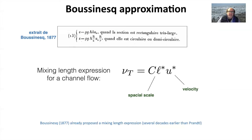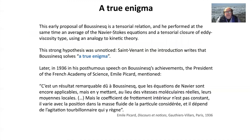Also in the same publication, what is interesting is that what we now call turbulent viscosity ν_t, Boussinesq noted as epsilon, and he proposed an expression for it as simply the product of a spatial scale and a velocity scale. So in fact he already proposed a mixing length expression several decades earlier than what was later proposed by Prandtl. At that time, Boussinesq was considered to have solved what was called the true enigma of turbulence.